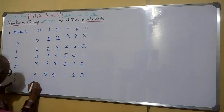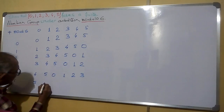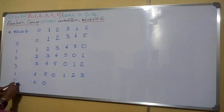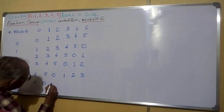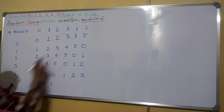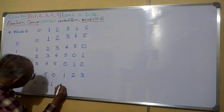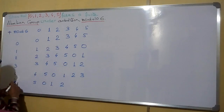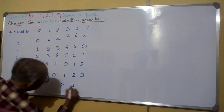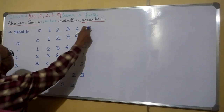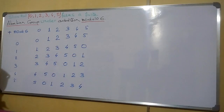5 plus 0 is 5; the remainder is 5. 5 plus 1 is 6; the remainder is 0. 5 plus 2 is 7; the remainder is 1. 5 plus 3 is 8; dividing by 6 the remainder is 2. 5 plus 4 is 9; dividing by 6 the remainder is 3. 5 plus 5 is 10; dividing by 6 the remainder is 4.